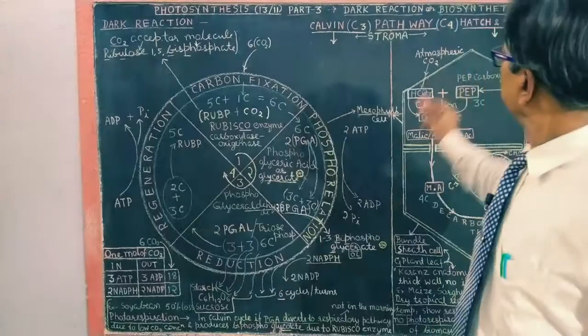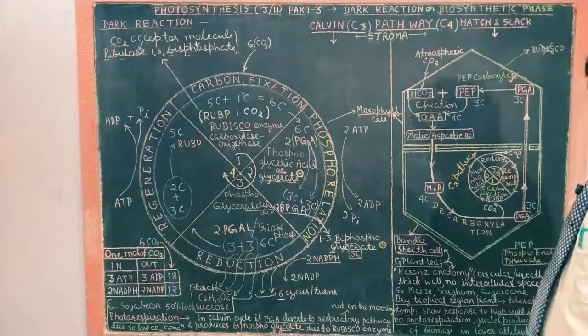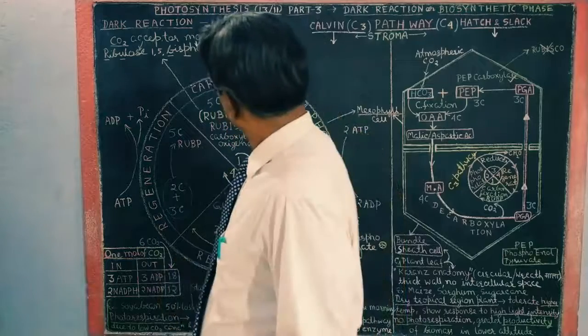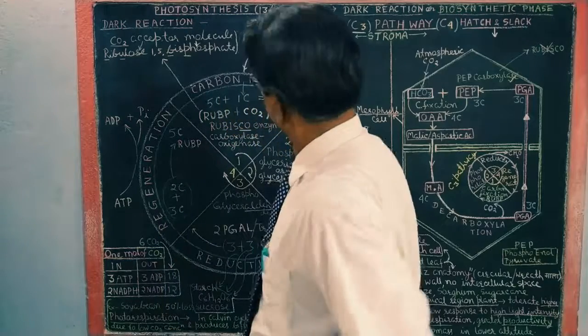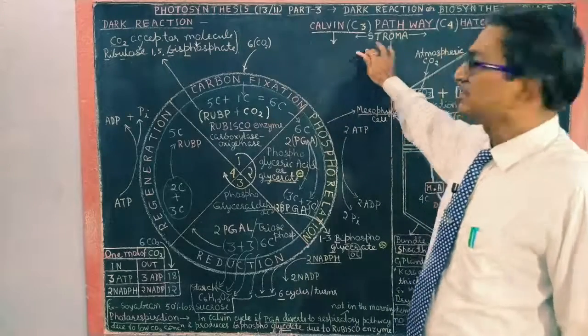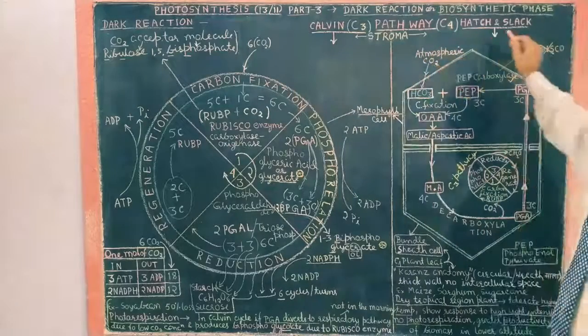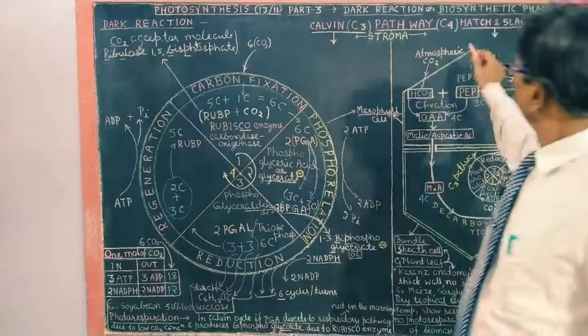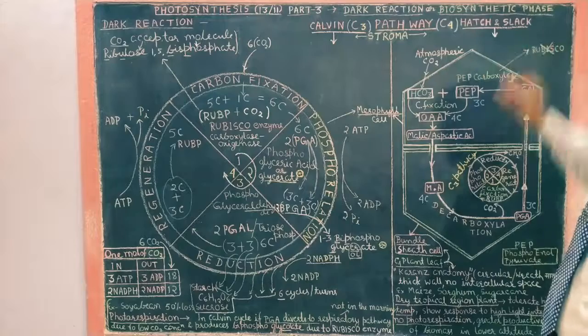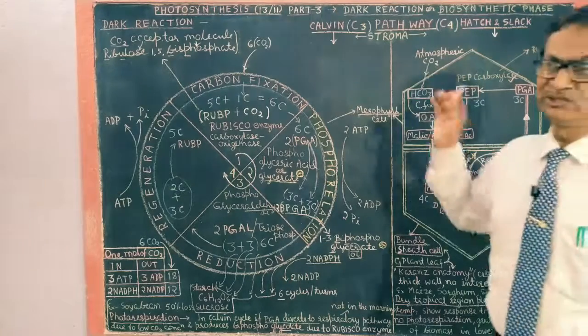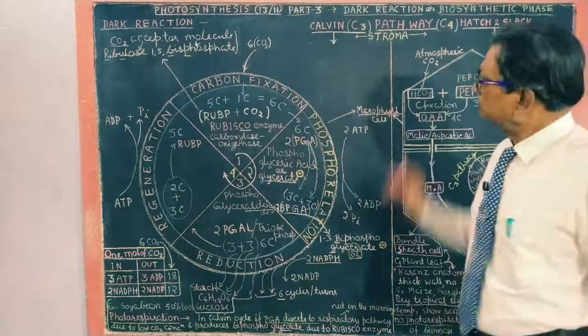C6H12O6, that's why it is called biosynthetic phase. So there are two parts of this dark reaction. Some plants follow Calvin C3 cycle and other plants follow C4 cycle. C3 cycle is Calvin cycle and C4 cycle is Hatch and Slack cycle.